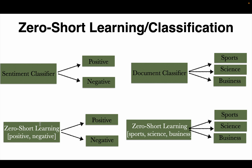The way zero-shot learning works: instead of training a model on two labels, positive and negative, at the time of inference we provide the labels. For a zero-shot learning model we say: 'I have this document, classify it as either positive or negative.' Then we take the same model and say: 'Classify this document as either sports, science, or business.' It's the same model — we provide our target labels at the time of inference, without training on either set of labels.